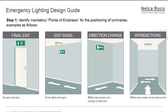Emergency lighting design guide: Step 1 is to identify the mandatory points of emphasis for the positioning of luminaires. Examples include the final exit — for example, the exit door and exit signs where you need to go. For all safety exit signs you need to identify those points, and also the direction of change — for example, if there is a corner, you need to identify that and put an exit sign for that area.